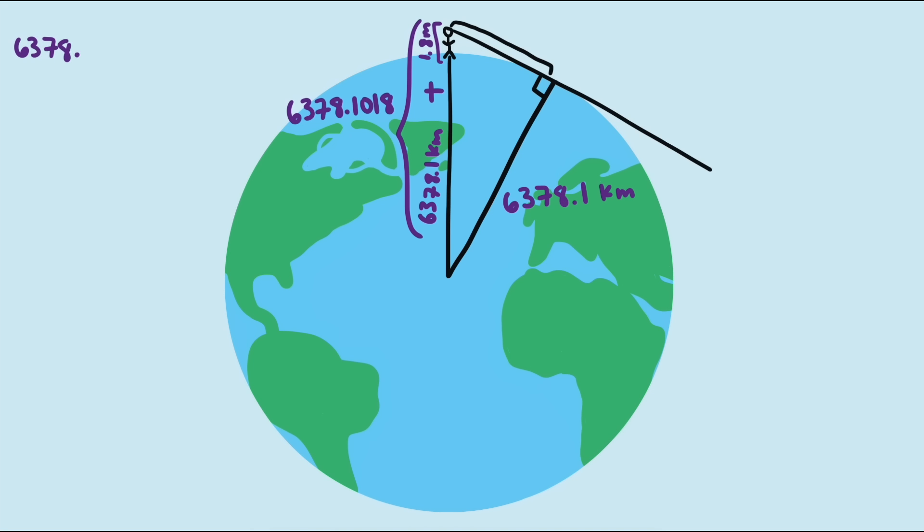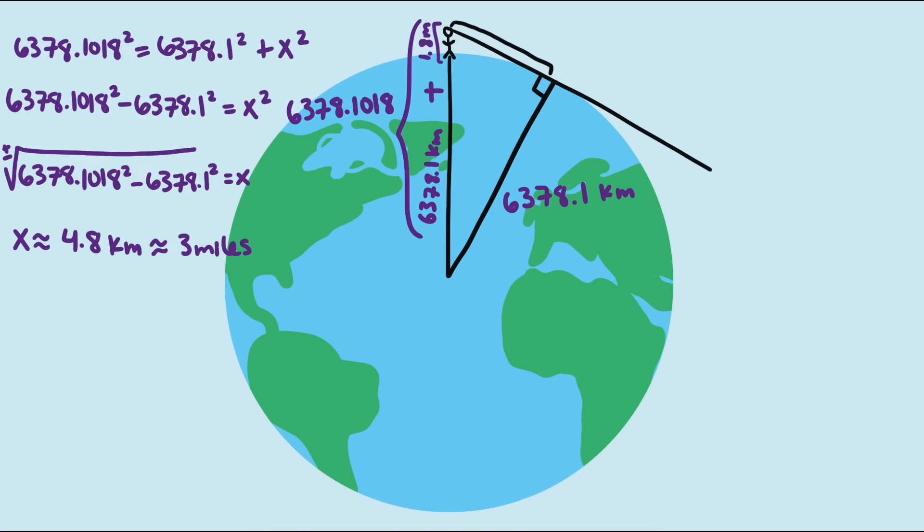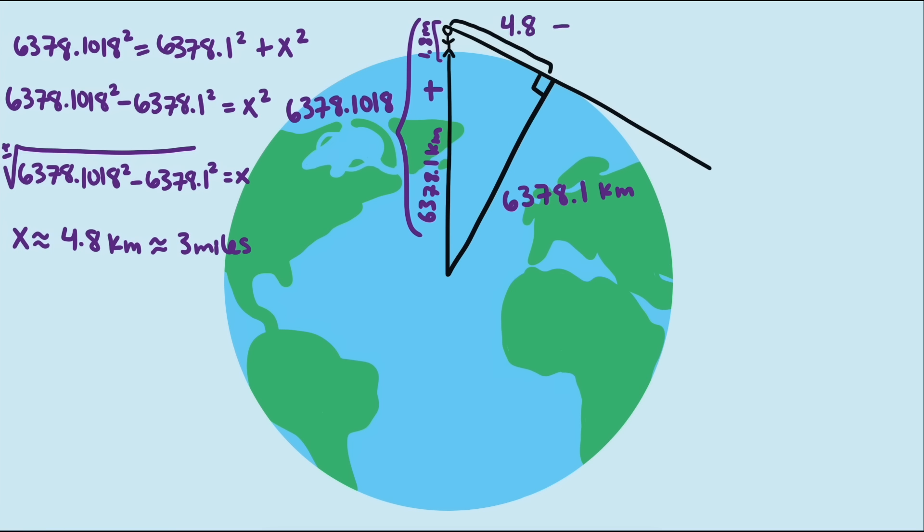Using the Pythagorean Theorem and being careful to convert my eye height to kilometers gets us a value of about 4.8 kilometers, or just under 3 miles. That really isn't very far.